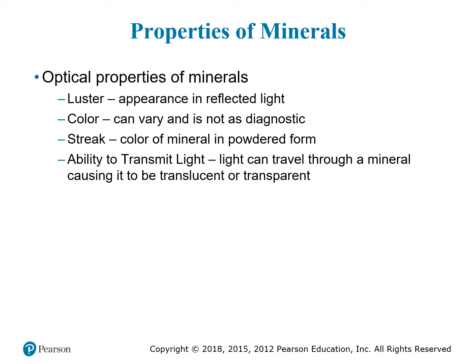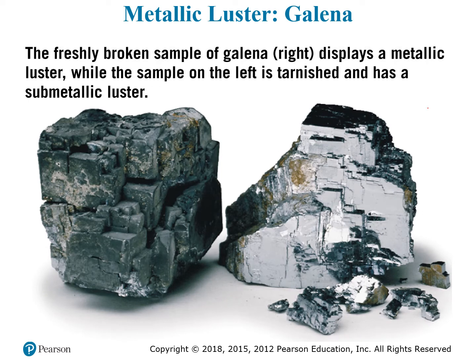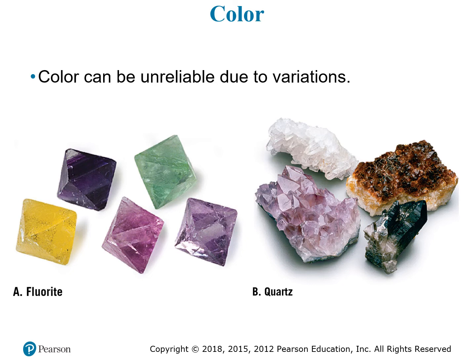You can also observe whether or not a mineral can transmit light — whether it's opaque or see-through. Here's an example of luster: galena, made up of lead and sulfur. It's very heavy with a high density, and it has a very metallic shine — we call that metallic luster. If it's not a fresh piece, it will look dull. Color can be unreliable due to very small variations in trace elements in the chemical structure.